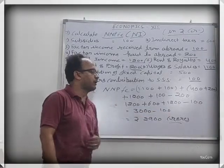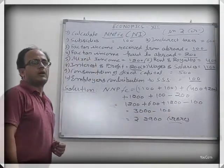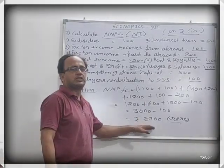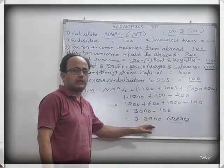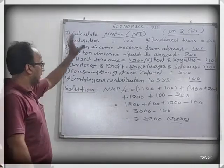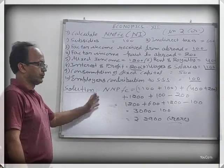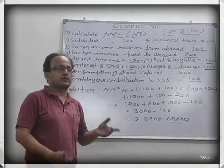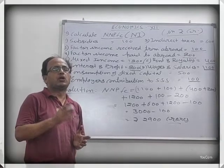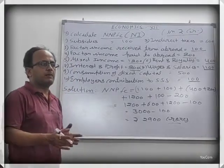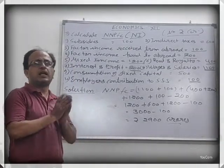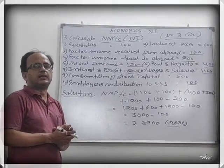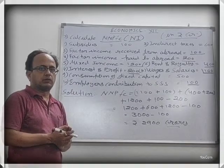So 3000 minus 100 equals 2900, which is the national income found with the given values. By applying the formula — Compensation of Employees plus Operating Surplus plus Mixed Income plus NFIA — we find the national income.